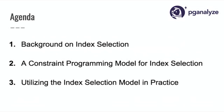We have three things to cover today. First, we'll give some background on the index selection problem and what that means. Then Philip will talk about a constraint programming model for index selection. Last, I'll talk about utilizing that model on an actual database, showing how you can get to essentially saying these are the missing indexes for this query workload as measured by pg_stat statements. At PG Analyze, we've thought about this problem of index selection for roughly two years. This is the third iteration. It's not intended to be the solution — it is a solution. My goal is that you find this interesting, ask questions, and maybe have ideas on how to improve it, so that as a community we can make Postgres smarter in terms of index selection.